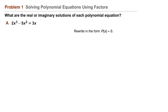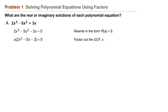First we'll start by rewriting this in the form p of x equals zero: 2x cubed minus 5x squared minus 3x equals zero. Then we'll factor out the greatest common factor, in this case x.